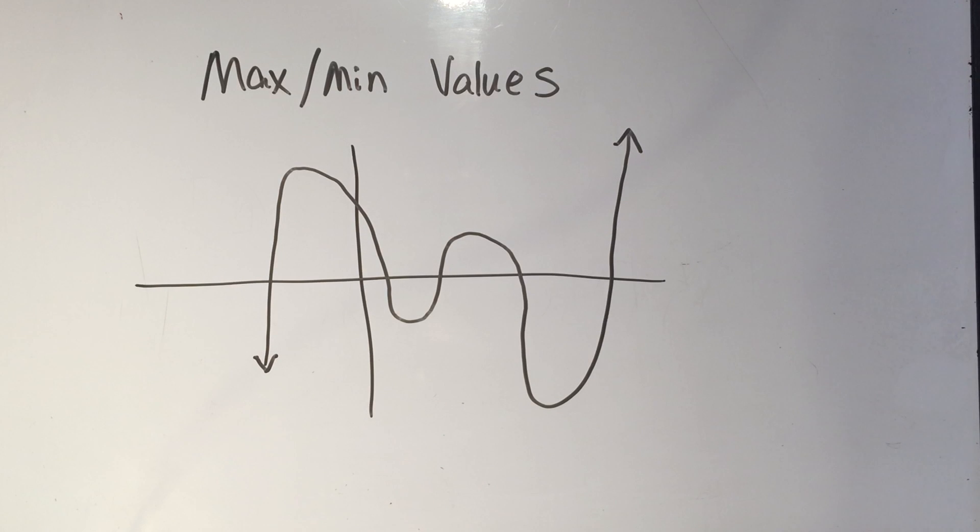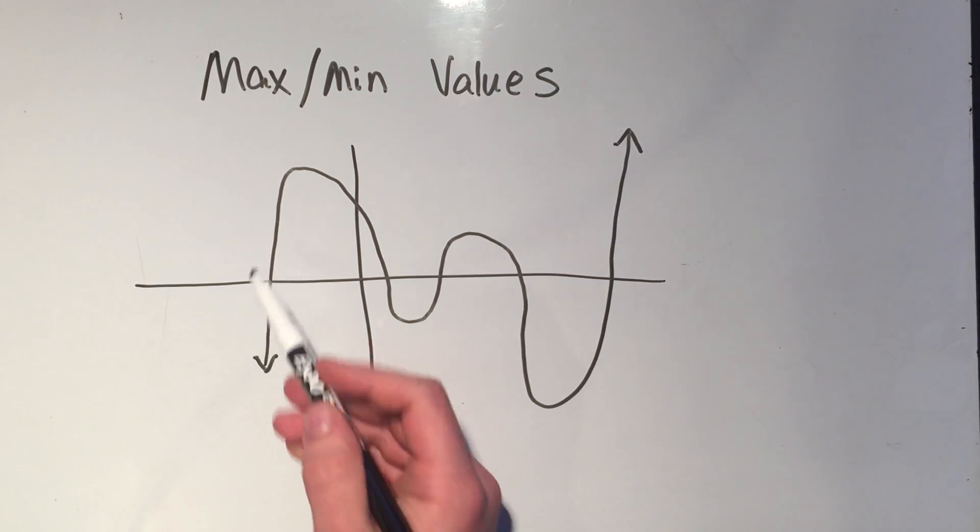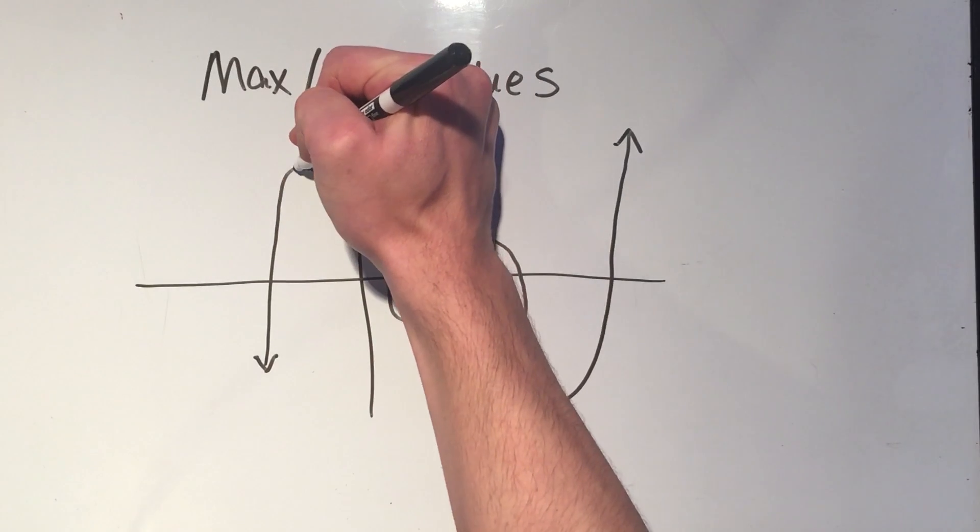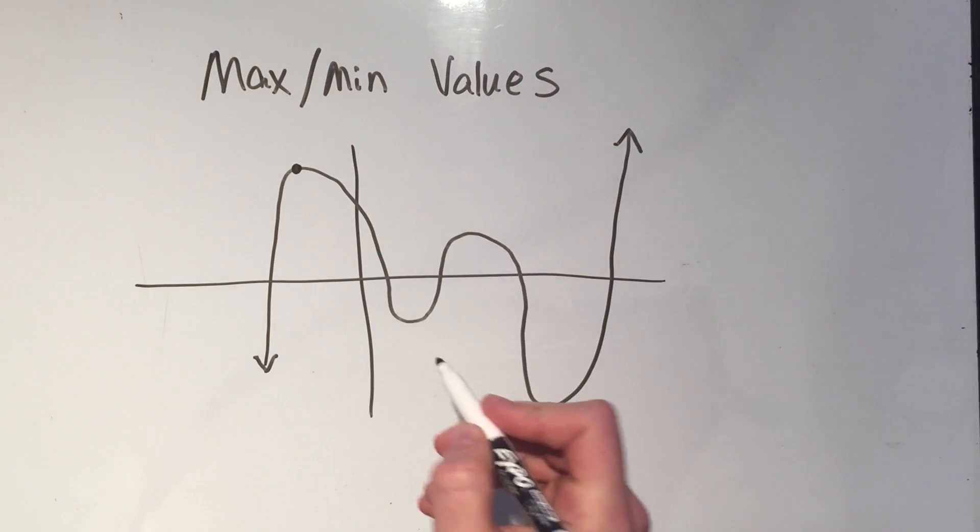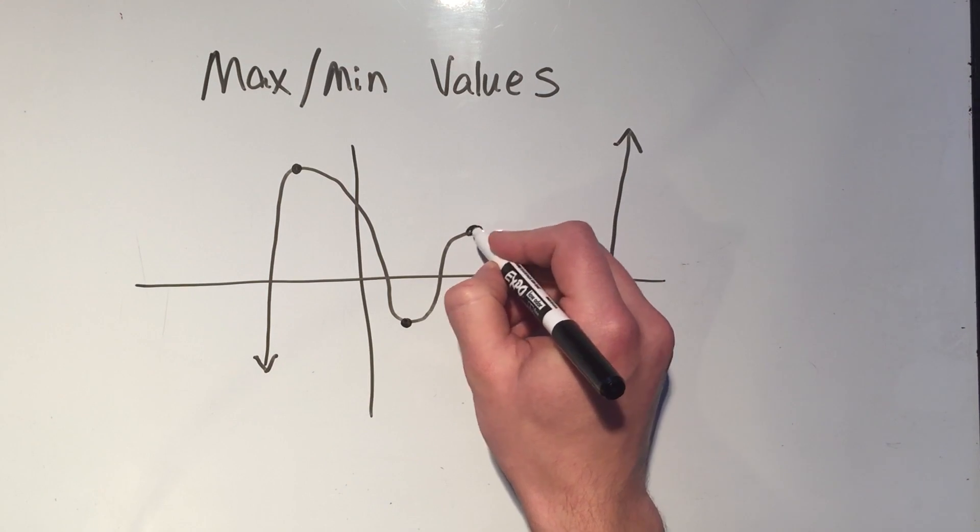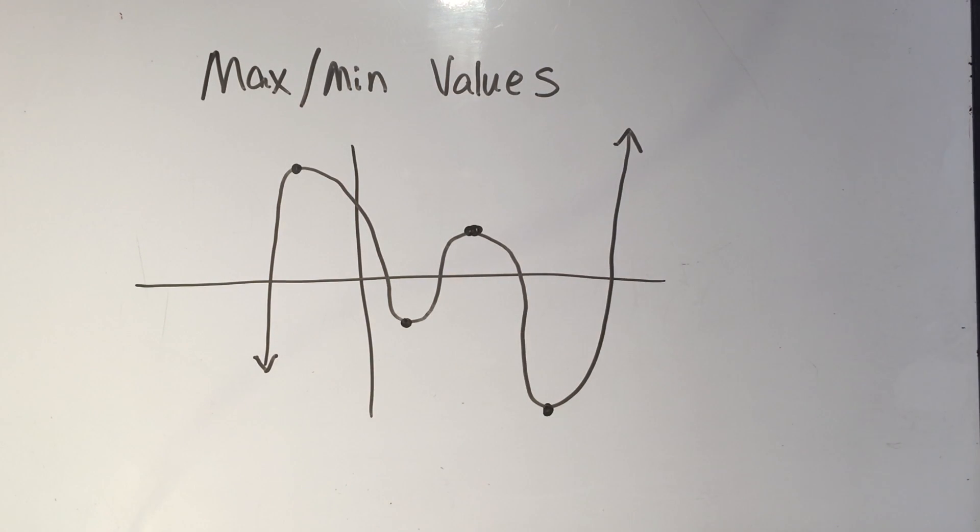I drew a graph here. So where would you say the maximum and minimum values are on this function? Well basically it's all of these points where the graph turns around, right? Like up here, like the top of a hill, or down here like a trough. So all of these things where the graph turns around, those are maximums or minimum values of the function. I think that's pretty easy to see.